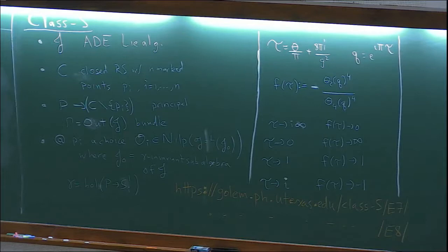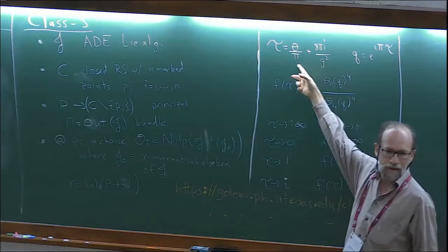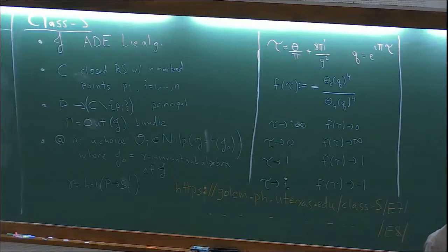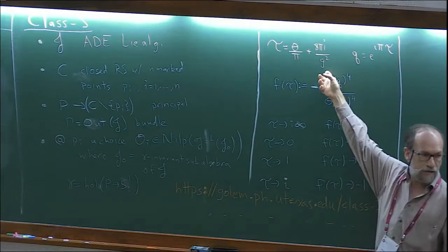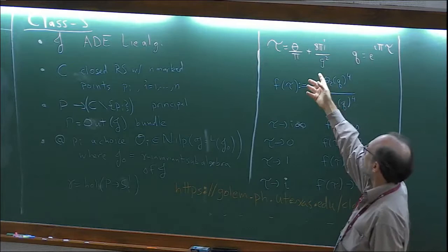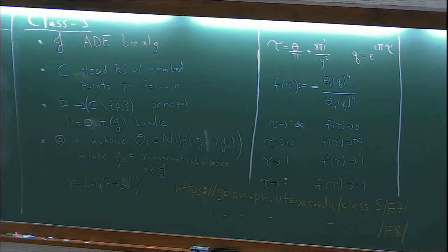The relation between the cross ratio and the gauge coupling is as follows: the gauge coupling and theta angle combine into a complex coupling tau, with q equals e to the i pi tau. The cross ratio turns out to be some ratio of fourth powers of theta functions. Weak coupling is g goes to zero, that's tau goes to i infinity, or f of tau goes to zero. Strong coupling is tau approaching the real axis, but there are different ways to approach the real axis.